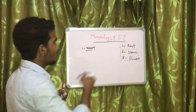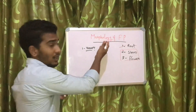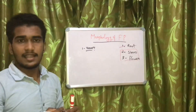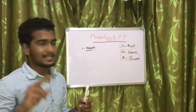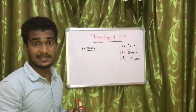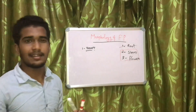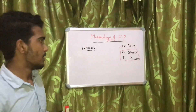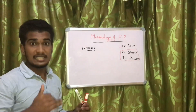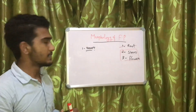Before discussing root, what do we mean by morphology? Basically there are two categories: morphology and anatomy. In morphology, we discuss about the external characters of the plants. In anatomy, we discuss about the internal characters of the plants.